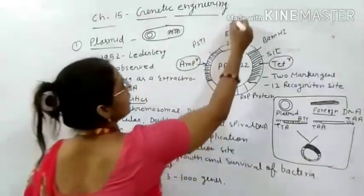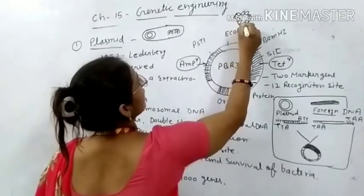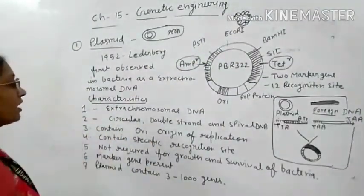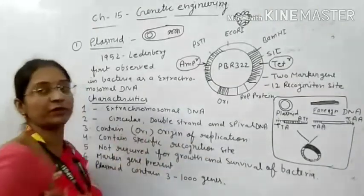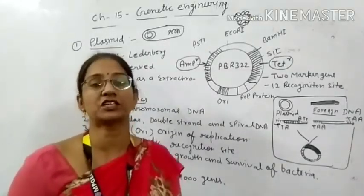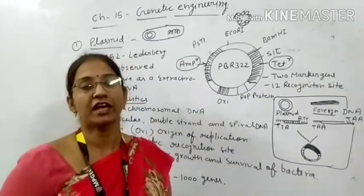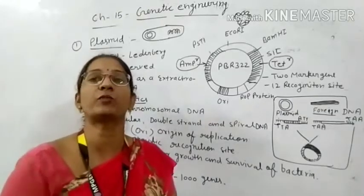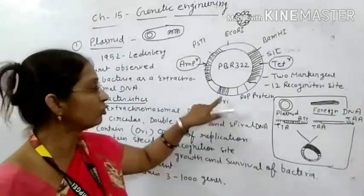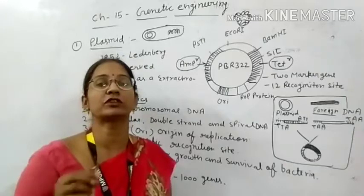Here we have made it spiral. This is circular, double-stranded, and this is the important quality. Third, it contains an origin of replication (OriR). The origin of replication is a special site where the plasmid can replicate — where the duplicate copy is made. This is a special site written in the plasmid where the replication process starts.